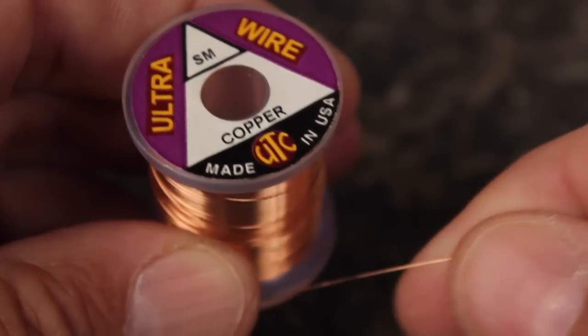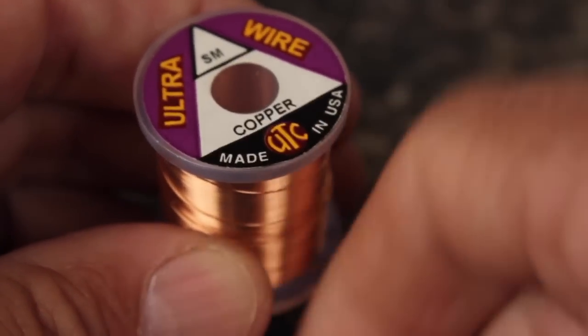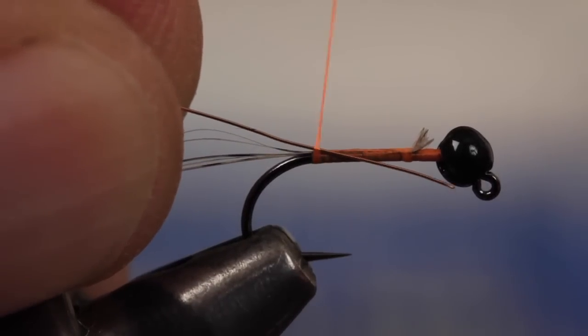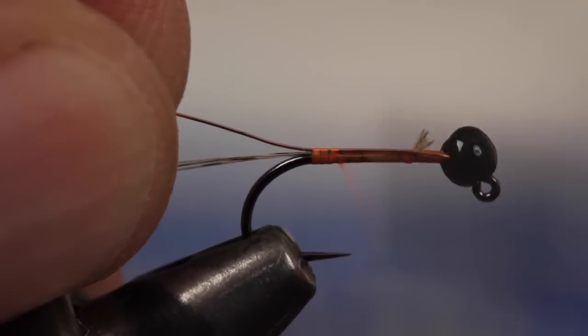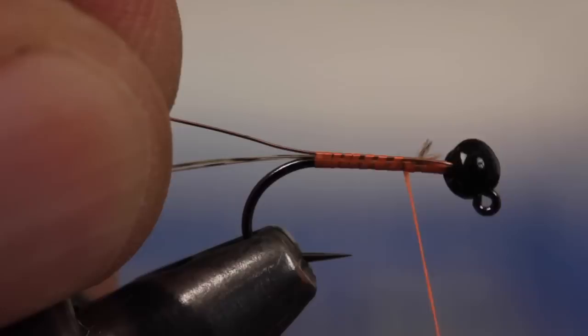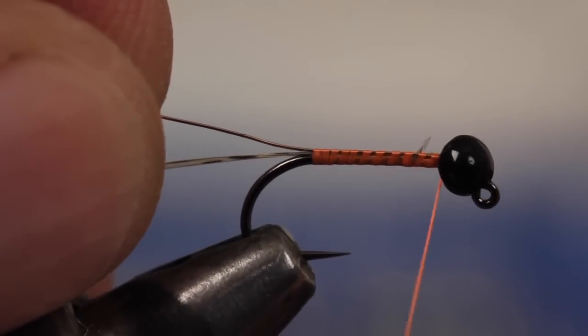Small copper colored ultra wire is used for a rib to both segment and reinforce the pattern. With the wire extending all the way to the bead, secure it to the top of the hook shank with wraps of tying thread. End with your thread a short distance behind the bead.